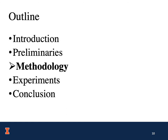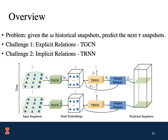Now let's move on to the methodology part. This slide provides an overview of the proposed approach. The problem we are considering is: given omega historical snapshots, we want to predict the next tau snapshots. For the first challenge of explicit relations, we propose a novel TGCN. For the second challenge of implicit relations, we propose a novel TRNN. For an input snapshot ST, we first use TGCN to capture the explicit relations and obtain the node embedding HT. Then HT is fed into TRNN to incorporate the implicit relations and temporal dynamics. YT-1 and YT are the hidden states of TRNN, and RT is the output of TRNN. Finally, given RT and HT, the output module predicts the values of the next temporal snapshot.